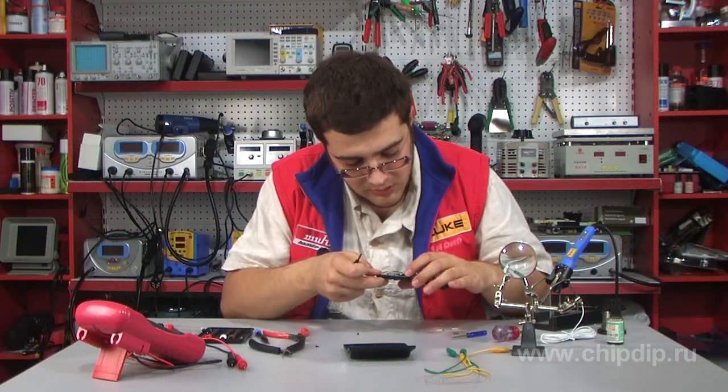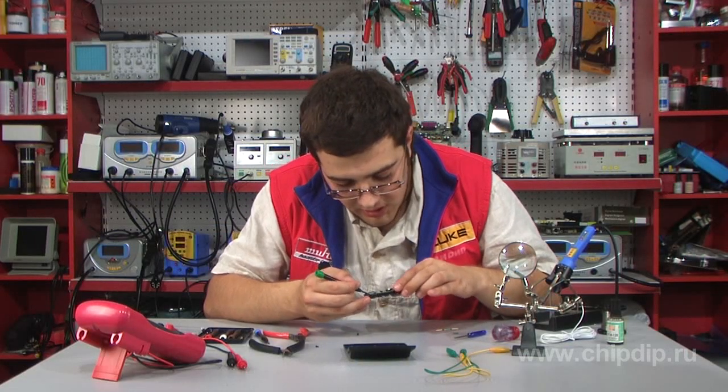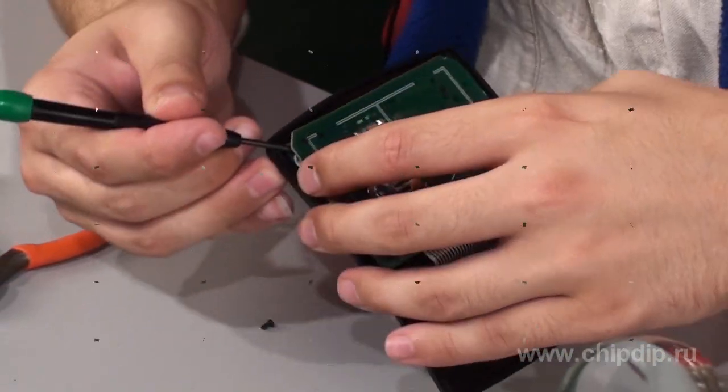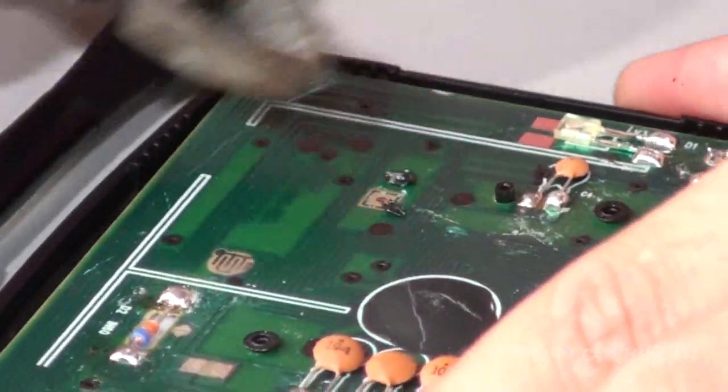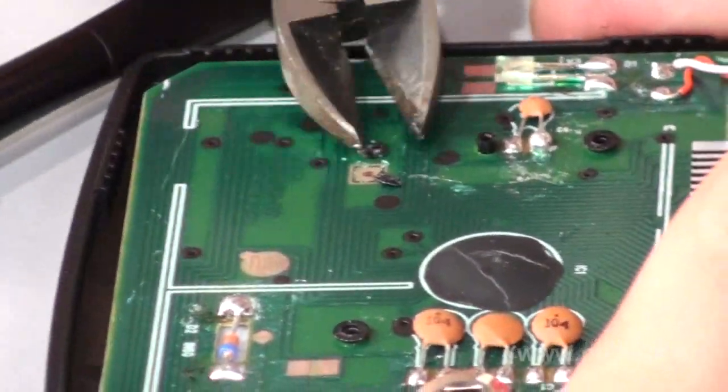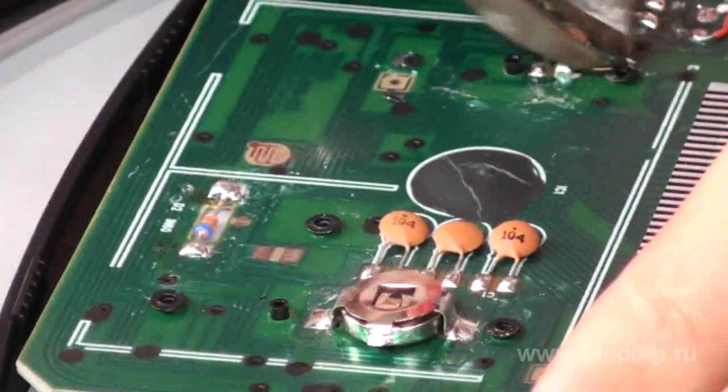Then we need to access the pads under the keys. In this case, we'll have to remove the plastic holders. However, usually these pads are attached by screws.